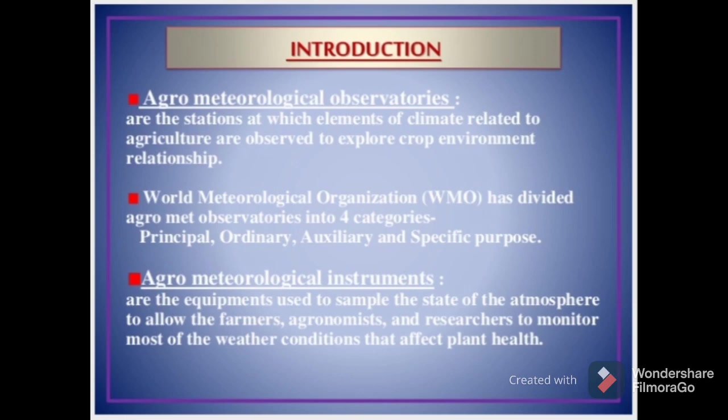These are the stations at which elements of climate related to agriculture are observed to explore crop-environment relationships. The World Meteorological Organization, or WMO, has divided Agro-Met Observatories into four categories: Principal, Ordinary, Auxiliary, and Specific Purpose.